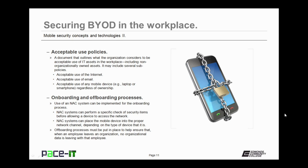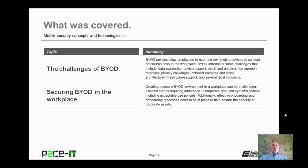Another method of securing BYOD in the workplace includes onboarding and offboarding processes. A network access control system can be implemented for the onboarding process. The NAC system can perform a specific check of security items before allowing a device to access the network, and can place the mobile device into the proper network channel depending on the type of device. As important as onboarding is, the offboarding process is also vital. Offboarding processes must be put into place to ensure that when an employee leaves an organization, no organizational data is leaving with that employee on their mobile device.